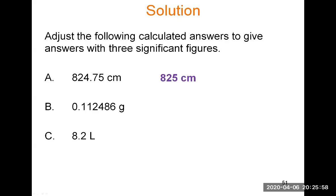For 0.112486 grams rounded to three significant figures, the leading zero is not significant — it only shows where the decimal point is. We start counting significant figures from the first 1, then the second 1, then the 2. What comes after the 2 is a 4, which is below 5, so we round down and drop everything after the 2. The answer is 0.112 grams.